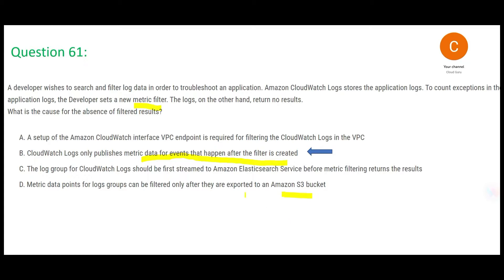Option D suggests filtering logs to an S3 bucket, but that is unnecessary — CloudWatch itself stores the logs, so exporting to S3 adds no value here. Option C talks about adding elasticity, which adds cost for no reason — it doesn't address the root timing issue. Option A talks about setting up an interface VPC endpoint, but the problem has nothing to do with VPCs. The issue is purely a timing one: certain steps must be done first.